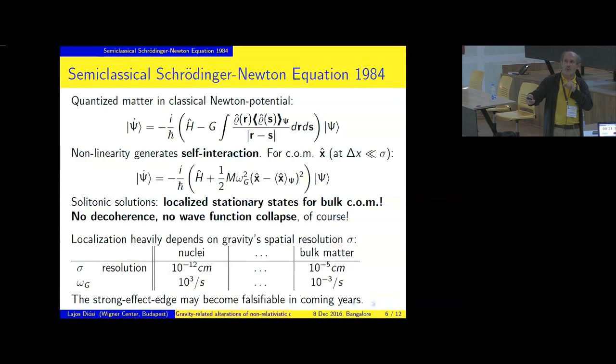And the minimum energy states are solitons, localized stationary states, meaning that for bulk bodies, the center of mass, the ground states are localized solitonic states. Which is great. We like it because, on the contrary, we have never accepted that the center of mass of bulk bodies could express large spatial distributions. Now we have localized stationary states for them.